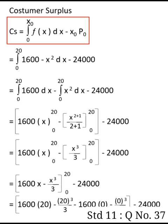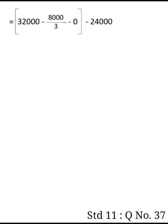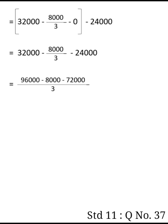This gives us 32,000 minus 8000 divided by 3 minus 24,000. Taking LCM, we get 96,000 minus 8000 divided by 3 minus 24,000, which equals 16,000 divided by 3, equals 5,333.3 units.